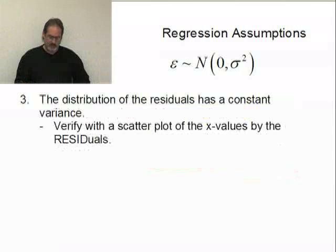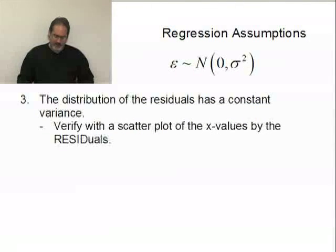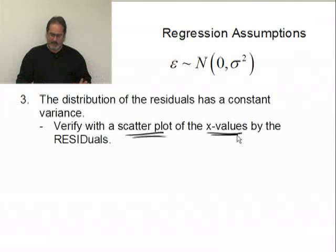Okay, what's next? The distribution of residuals has a constant variance. Now, we're going to verify this by doing a scatter plot. We do a scatter plot. We put the x values, the pollution index in this case. And, we'll take that and on the y-axis put the residuals. So, we'll do a scatter plot of the pollution versus residuals. So, let's go ahead and jump to the calculator.